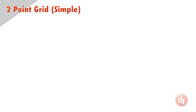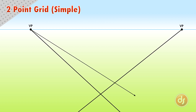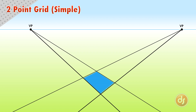Now let's do a simple grid in two-point perspective. Start with a horizon line and choose two vanishing points. Then draw lines from your vanishing points to create a single square on the ground plane — this will be the first tile of our grid. Now we draw a line across the corners of our first tile to the horizon to get the 45-degree vanishing point. Next, we draw a line down from the 45-degree vanishing point through the opposite corner of our tile. These two 45-degree lines will be how we construct the grid.